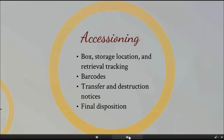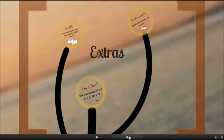Eloquent Records offers additional modules to manage accessions, track and manage storage locations, and track your retrievals. Included with the system is the ability to assign barcodes and print labels for your folders and boxes. You can run transfer and destruction notices when it comes time to review records for final disposition, and you can flag your records with their final disposition status. For example, when you destroy your electronic records, the record does get permanently deleted, but the metadata will remain as evidence, and it includes the destruction dates and the authorization details. Everything else in the system will simply be marked as destroyed.